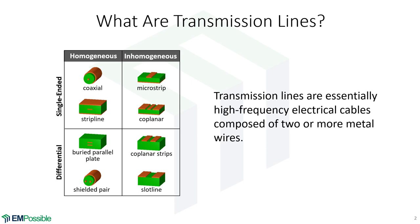So first, what is a transmission line? A transmission line is essentially a cable that transports a high frequency signal. Now, there are also power transmission lines, but here we're primarily talking about the high frequency lines.